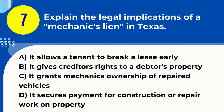Question 7. Explain the legal implications of a mechanic's lien in Texas. A. It allows a tenant to break a lease early. B. It gives creditors' rights to a debtor's property. C. It grants mechanics ownership of repaired vehicles. D. It secures payment for construction or repair work on property. Answer: D. It secures payment for construction or repair work on property. Explanation: A mechanic's lien in Texas is a legal tool that secures payment for contractors or repair professionals who have performed work on a property.